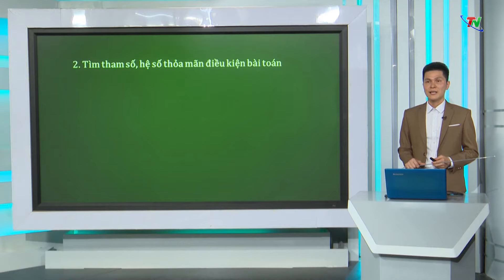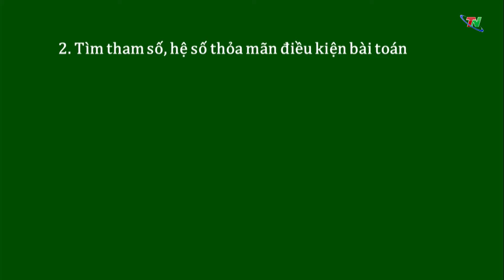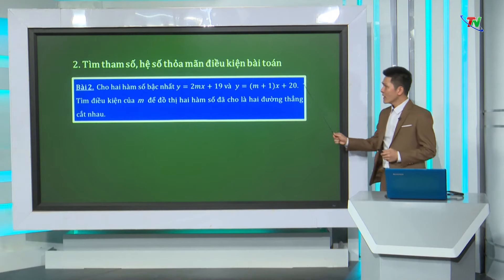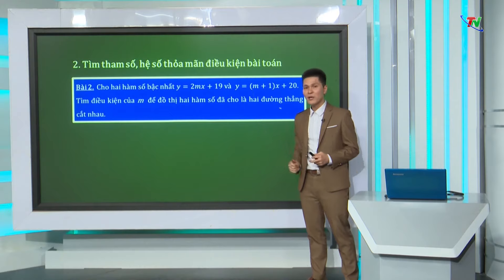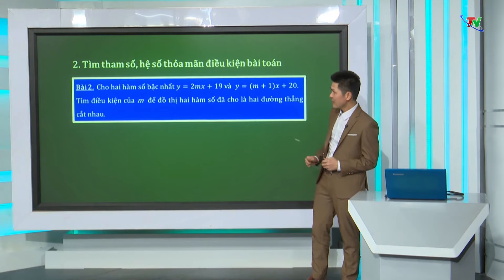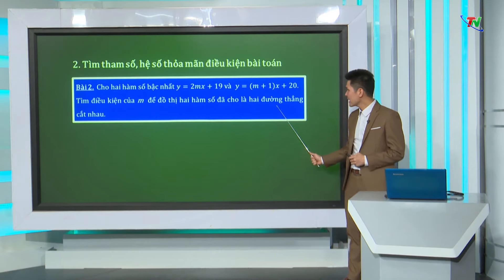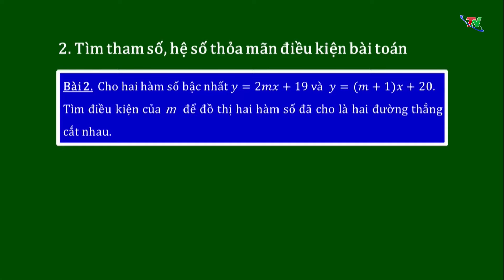Vận dụng điều kiện về đường thẳng song song và đường thẳng cắt nhau, chúng ta cùng tìm hiểu dạng bài tập tìm tham số, hệ số thỏa mãn điều kiện bài toán. Bài 2: cho 2 hàm số bậc nhất Y bằng 2mx cộng 19 và Y bằng (m+1)x cộng 20. Tìm điều kiện của M để đồ thị 2 hàm số đã cho là 2 đường thẳng cắt nhau. Các em thấy 2 hàm số bậc nhất này có hệ số A và A' chứa tham số M, vậy để tìm điều kiện của M, các em chú ý 2 điểm sau.